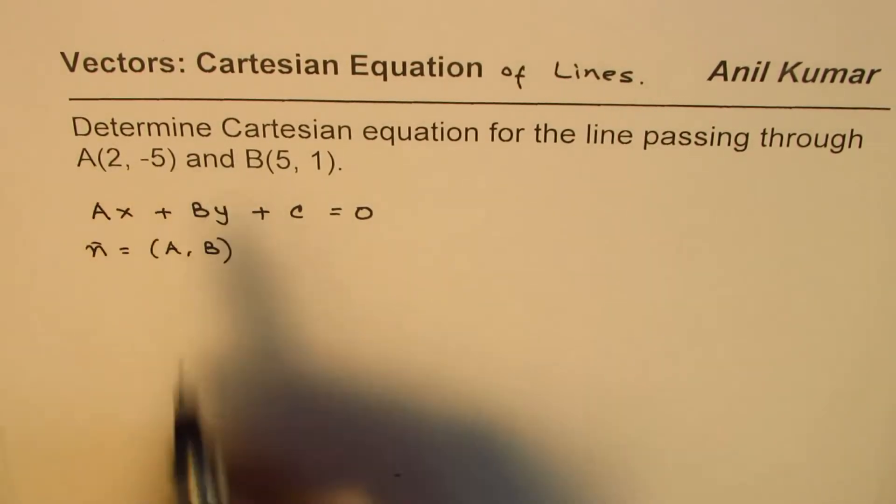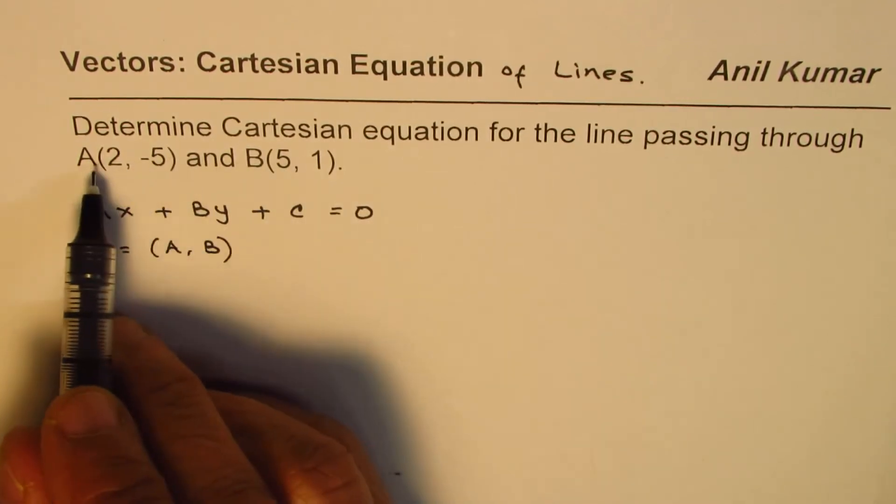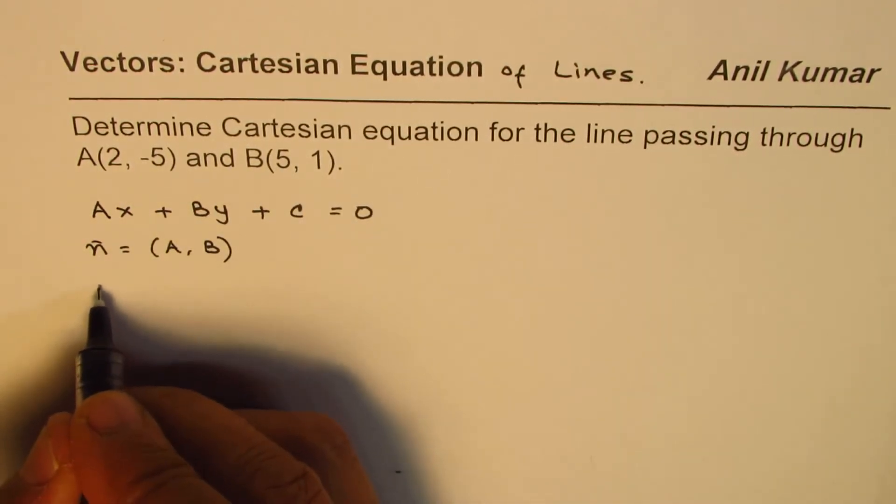In our case, what are we given? We are given the two points. So from these two points we can find the direction vector. Let's call that as M.